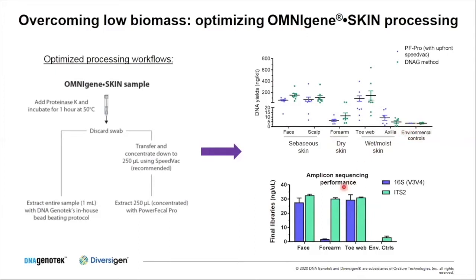We then checked the performance of extracted DNA in amplicon sequencing applications, both 16S and ITS. Looking at final library quants from amplification with 16S and ITS for face, toe web, and forearm: we got robust amplification and final library quants for both 16S and ITS for toe web and face. We saw slightly less amplification for 16S for forearm samples, but that's expected because yields are significantly lower. Importantly, PCR amplification on environmental controls shows very low final yields, again indicating the bioburden in our kits is very, very low — barely any detectable amplification.